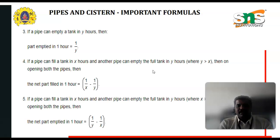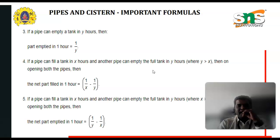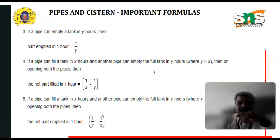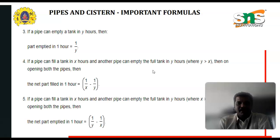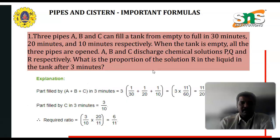If a pipe can fill a tank in x hours and another pipe can empty the filled tank in y hours, where x is greater than half of y, then on opening both pipes, the net part emptied in 1 hour is 1/y minus 1/x.